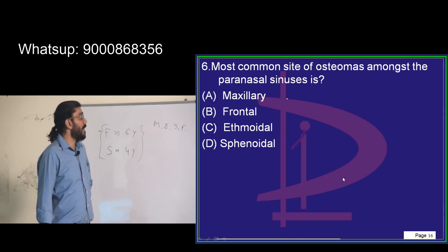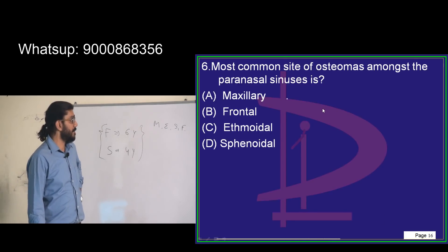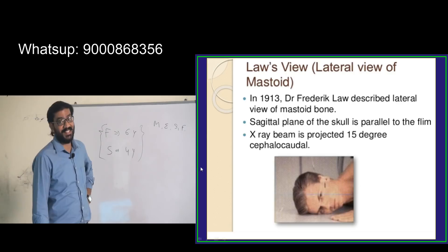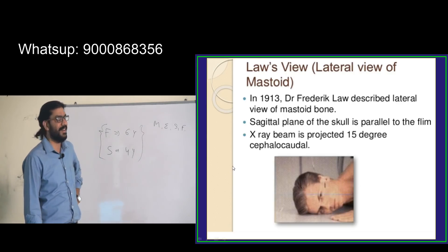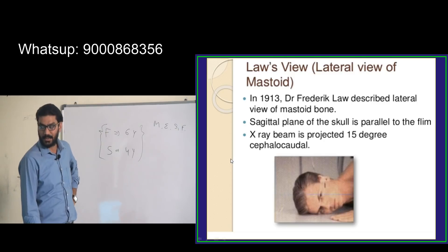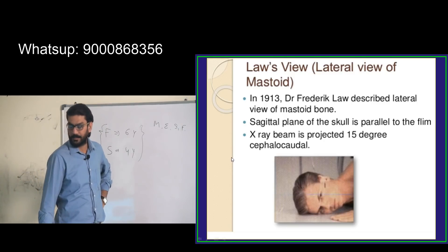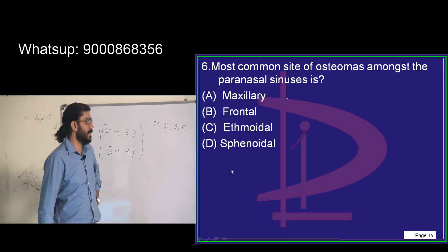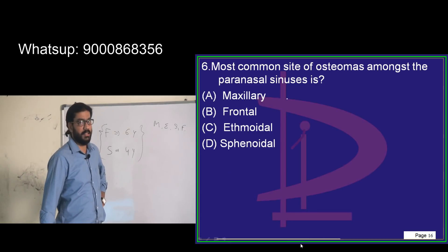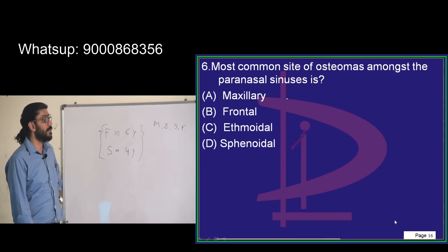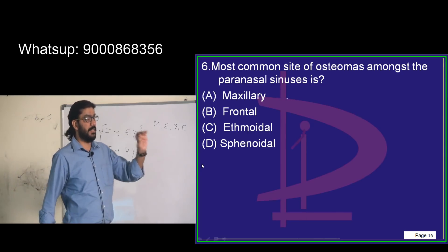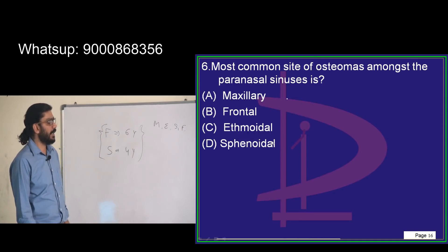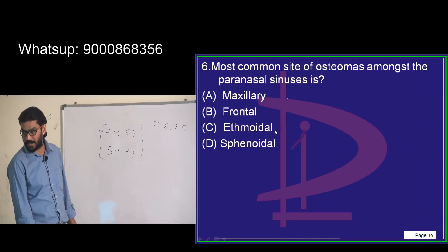Next question: most common site of osteomas among the paranasal sinuses. One notification: this is not purely a PNS question — it is also an ear/mastoid question. The answer for osteoma: I already mentioned it when dealing with fibrous dysplasia. Fibrous dysplasia is seen in the maxillary sinus; osteoma is seen in the frontal sinus. Most people are giving the correct answer: frontal sinus.